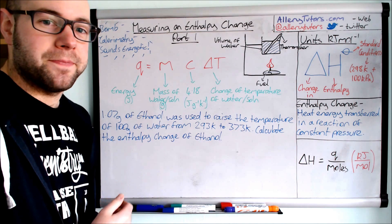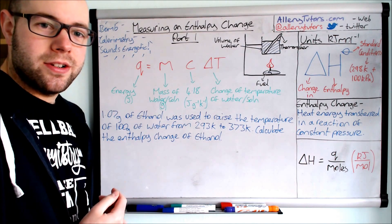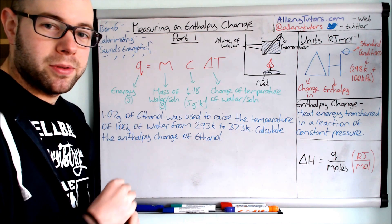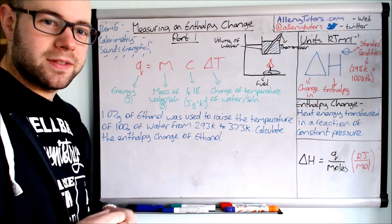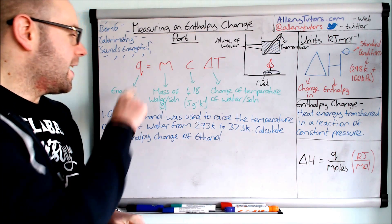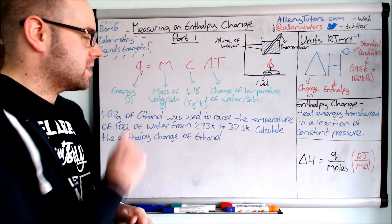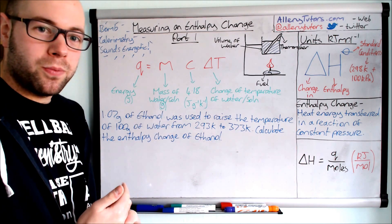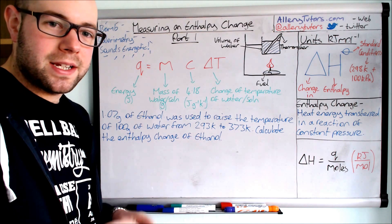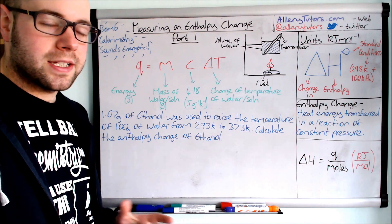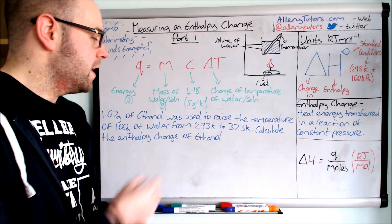We're going to be using this equation here to help us work out an example question. So you can see here we've got q equals mc delta t. The q bit stands for energy which is measured in joules. The m bit stands for the mass of the water or the solution that we are heating up. If this is mixing two liquids together like a neutralization reaction, it's the combined mass of both liquids, but there is a separate video on that and this is measured in grams.